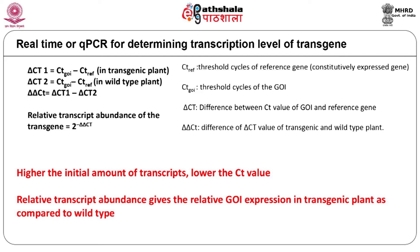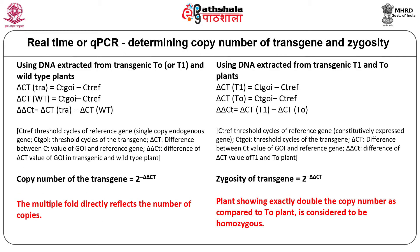qPCR can also be used to determine the copy number of a transgene if DNA is used instead of cDNA. To determine copy number in T0 plants, the Ct value of the gene of interest is compared to the Ct value of a wild type single-copy endogenous gene as a reference, for example, the sucrose phosphate synthase gene in rice. The fold value given by the delta-delta Ct method directly reflects the number of copies. To determine homozygosity in T1 plants, Ct values of the gene of interest in T1 and T0 plants are compared to the Ct values of a constitutively expressed gene like actin. A plant showing exactly double the copy number compared to the parent T0 plant is considered homozygous.